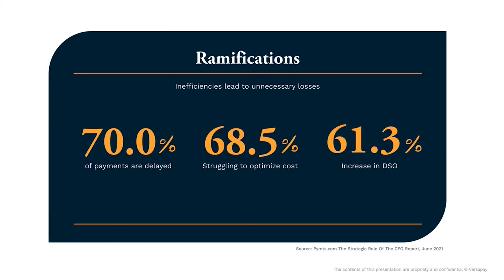We're seeing 70% delay in payments for people who are not automating their systems today. If you think about what's happened in the last year or two with COVID and what's going on in our society, a lot of businesses have had to transform and change the way they do business because they no longer have people in the office — people are no longer able to take checks and manually do those deposits and take them to the bank. People are really struggling to figure out how to get efficiencies, get payments in the door faster, get them applied quicker and easier, and optimize their own team.